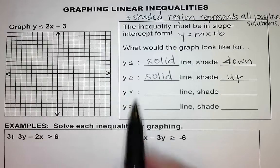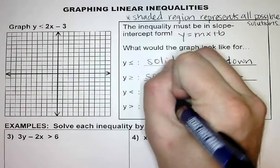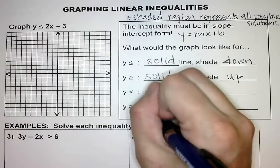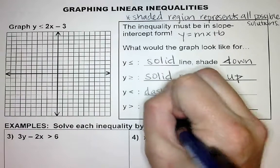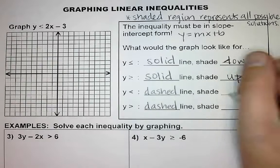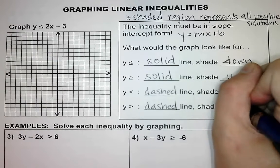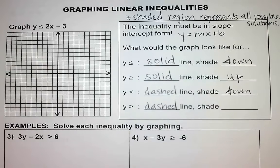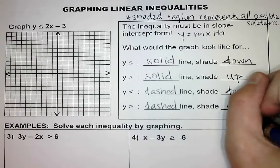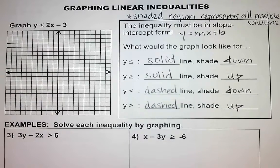If it's a less than, we don't have a solid line — we will have a dashed line. If it's a greater than, it will not be a solid line, it will be a dashed line. But if it's a less than, you still shade down, just with a dashed line. If it's greater than, you still shade up, but you shade up with a dashed line.